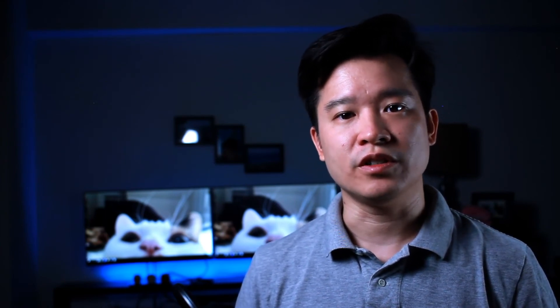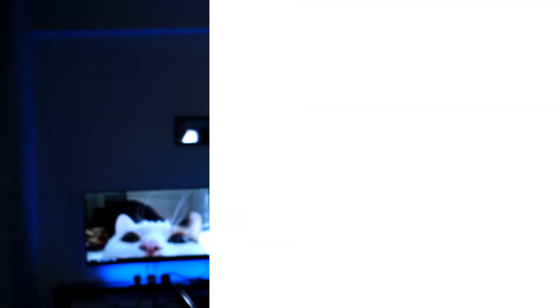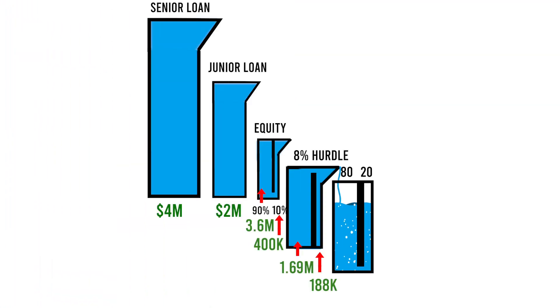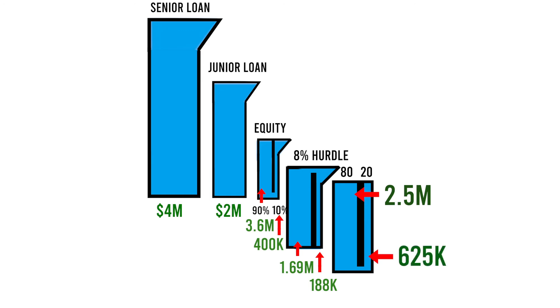The GP gets a promote over the hurdle. One common structure is to increase the GP portion of the remaining profits to 20% instead of 10. In industry lingo, we shorten this structure to 80-20 over 8. So the LP gets 80 cents and the GP gets 20 cents for every dollar paid out until the end. Of the remaining $3.12 million in profit, $2.5 million goes to the LP and $625,000 goes to the GP.